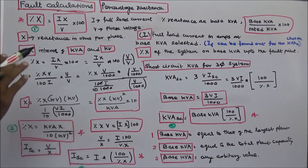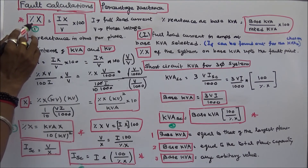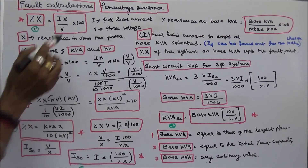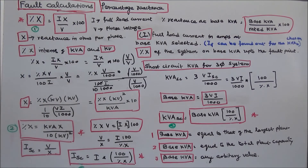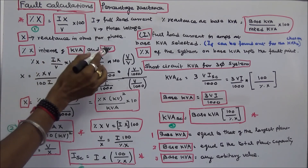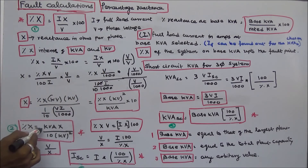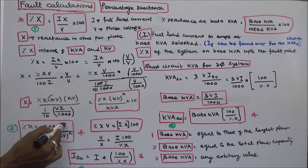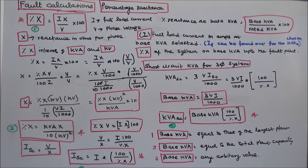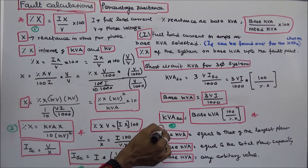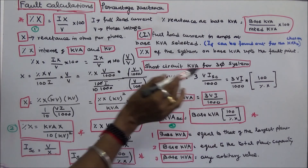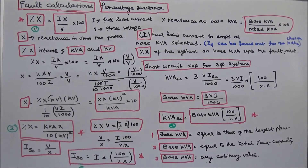In summary, there are four key formulas. First, percentage X equals I times X divided by V, times 100. Second, percentage X equals KVA times X divided by 10 times KV squared. Third, short circuit current ISC equals I times 100 divided by percentage X. Fourth, short circuit KVA equals base KVA times 100 divided by percentage X.